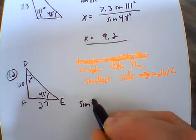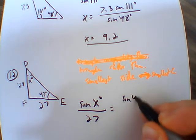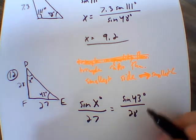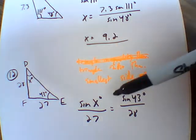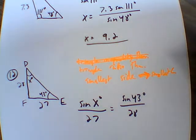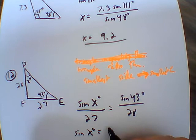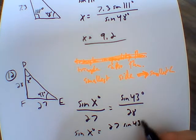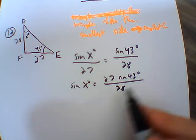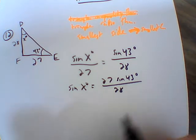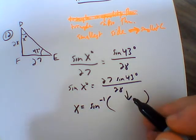So now we want to solve for x here. So I'm going to go sine of x degrees over 27 equals sine of 43 degrees over 28. Once again, the angle and the side opposite will form a ratio, and then any parts of this ratio can be set equal to each other. So now we want to solve for x here. So what we go here is I go sine of x degrees equals, I'm going to multiply over by 27.